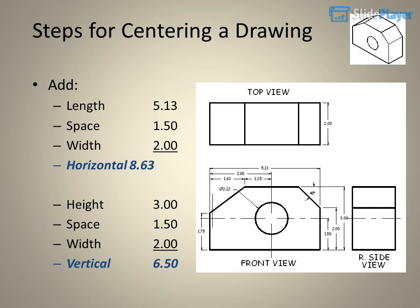To center a drawing, add up the measurements: Length 5.13, Space 1.50, Width 2.00 — giving a horizontal total of 8.63. Vertically: Height 3.00, Space 1.50, Width 2.00 — giving a vertical total of 6.50.